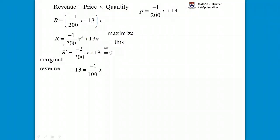We're going to set this equal to 0 and solve. What we'll get is negative 13 is equal to negative 1 over 100x, if I cancel the 2's. Then times everything by negative 100, and we get that x is 1300.